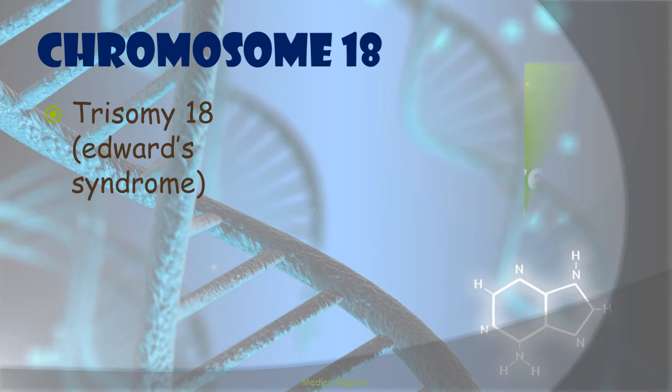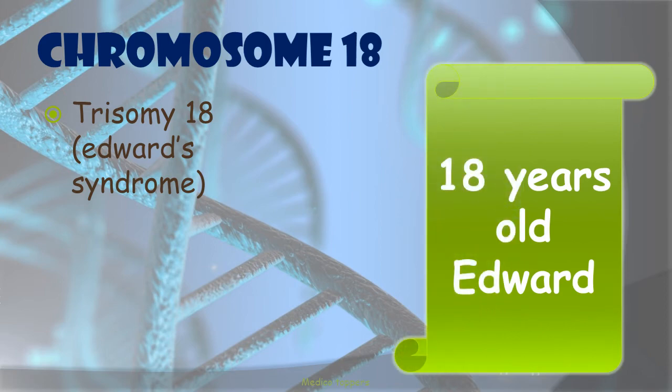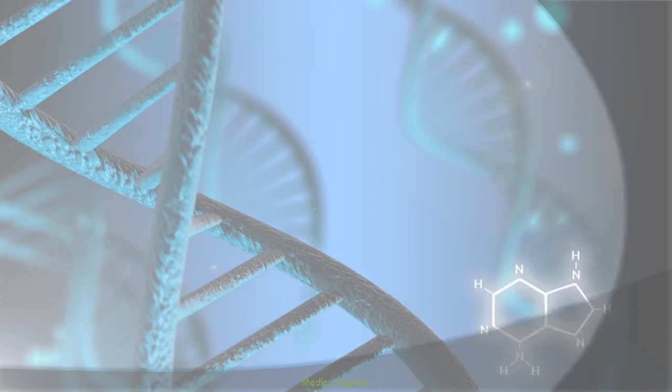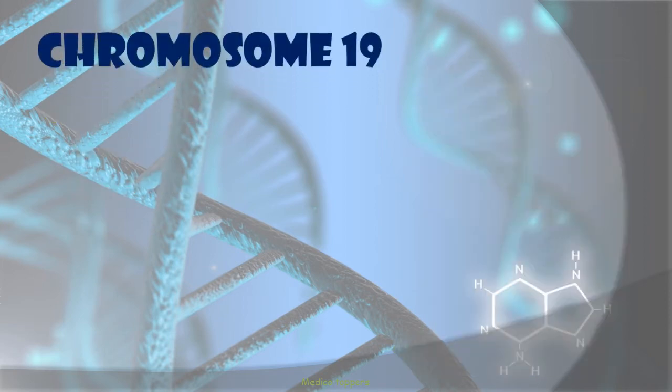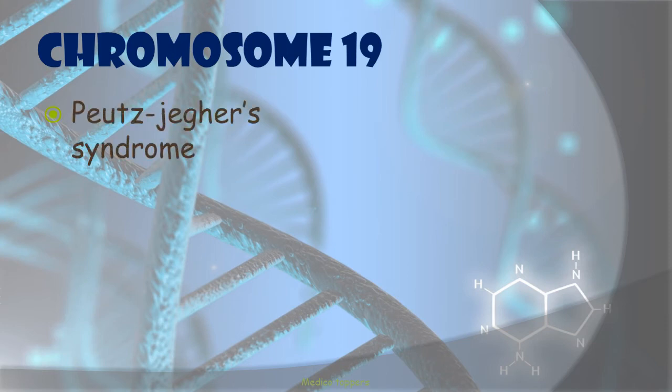The mnemonic for chromosome 18 is '18-year-old Edward' — whoever Edward you know, they are only 18 years old. Then chromosome 19 is associated with Peutz-Jeghers syndrome, which involves polyps in the small intestine.